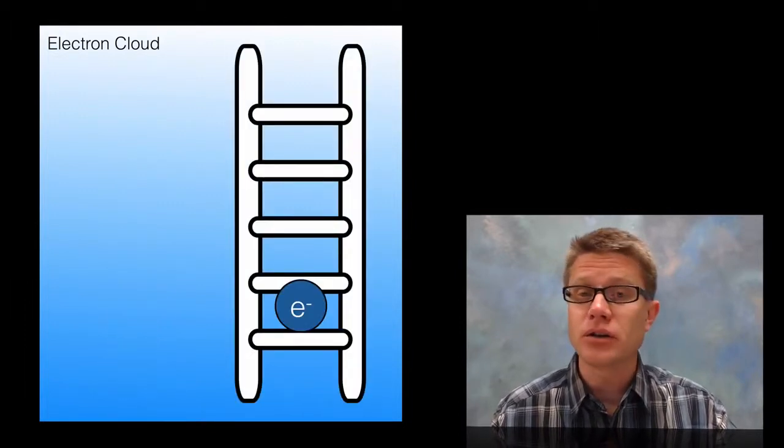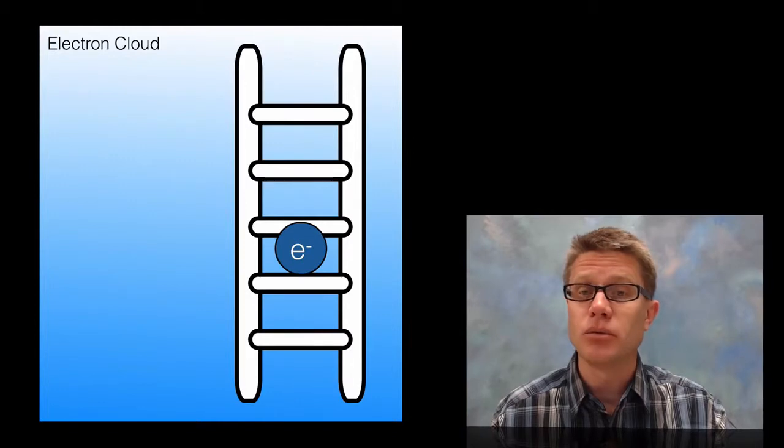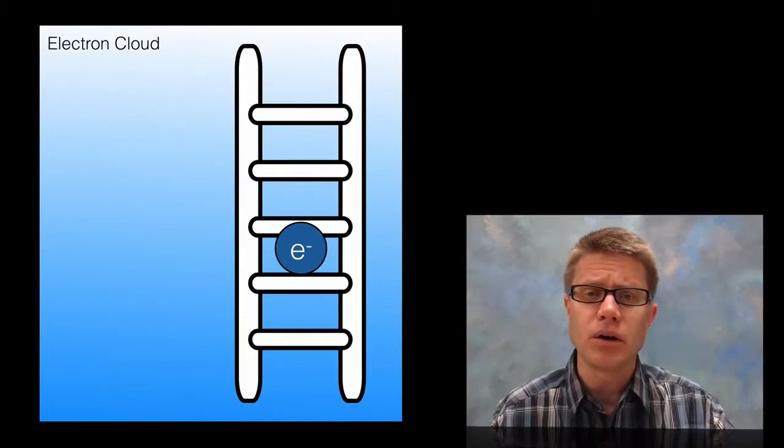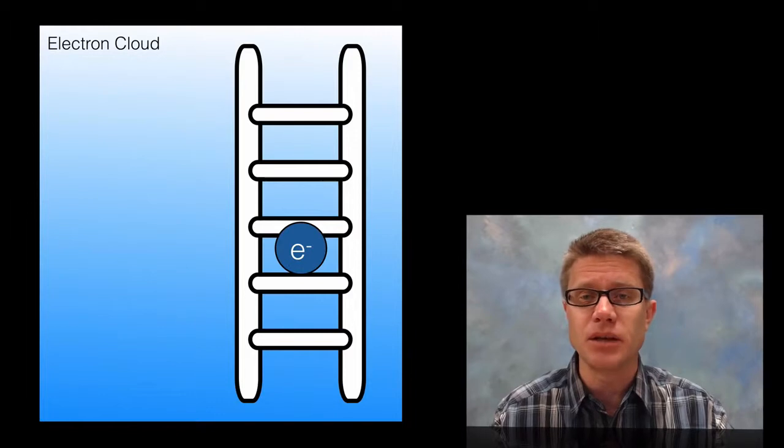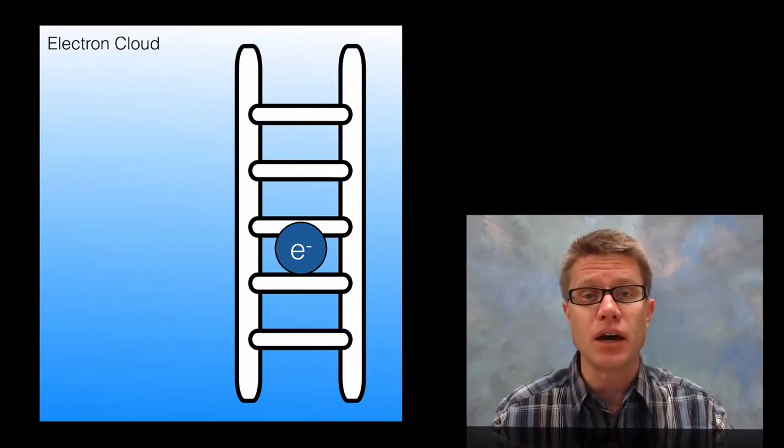Almost like a ladder. That an electron could be here, but it could also be here. And it could never be found in the middle. We call that being quantized. It has to be in a specific unit to exist.